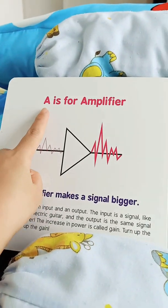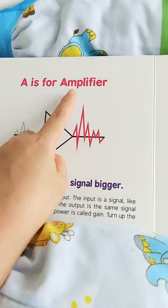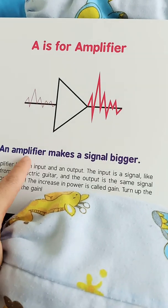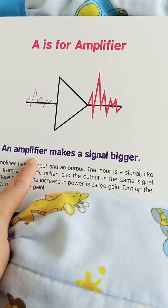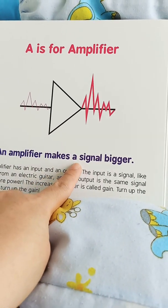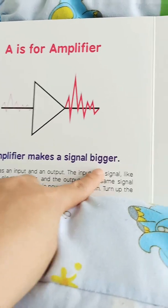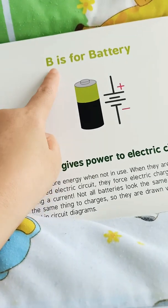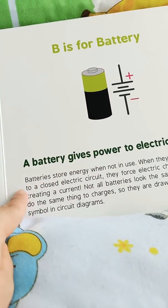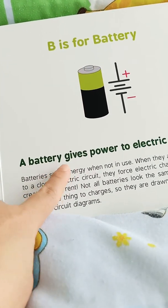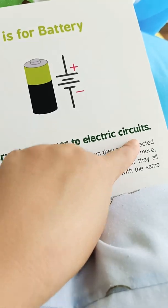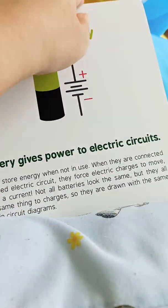A is for Amplifier. An Amplifier makes a signal bigger. B is for Battery. A Battery gives power to electric circuits.